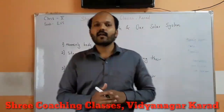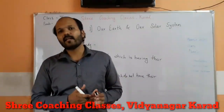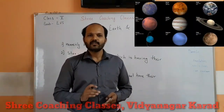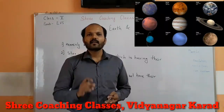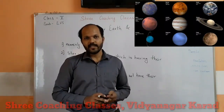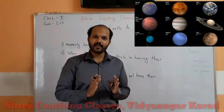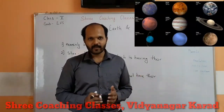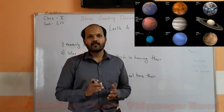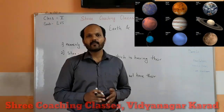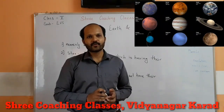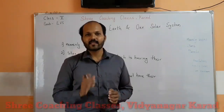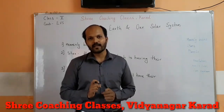Like Earth, there are other planets in the solar system. They are Mercury, Venus, Mars, Jupiter, Saturn, Uranus, and Neptune — including Earth, which is also one type of planet. So these are the eight planets which are present in our solar system.